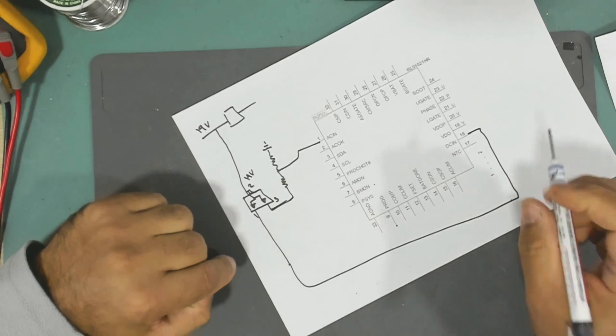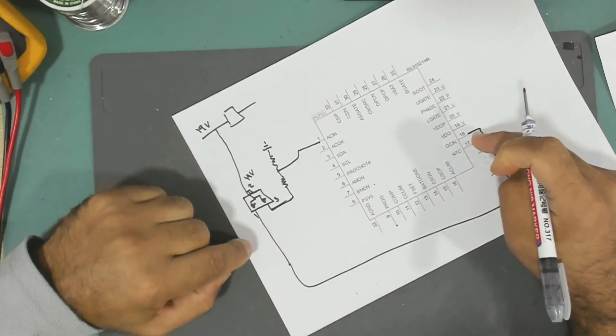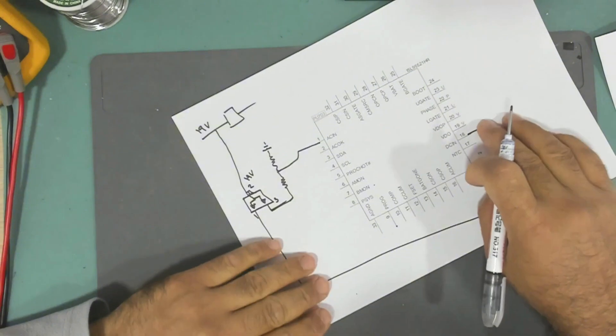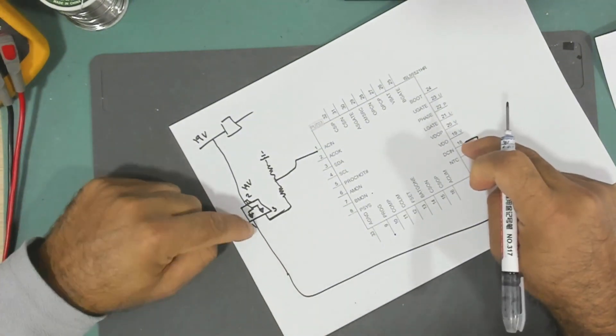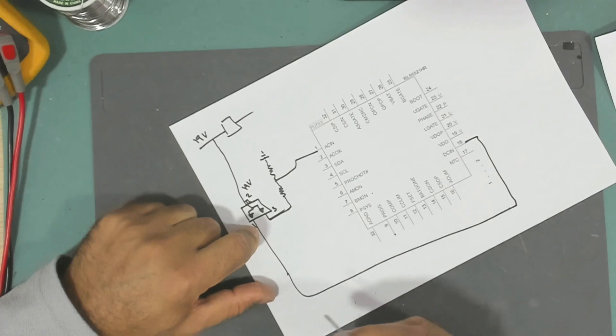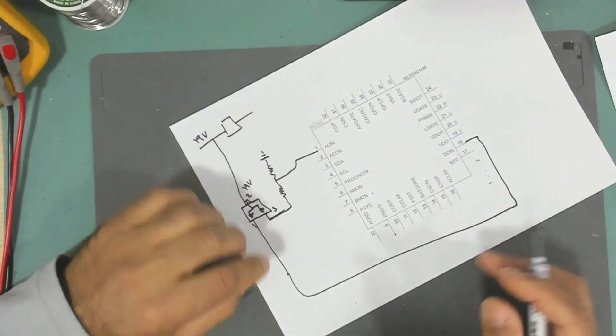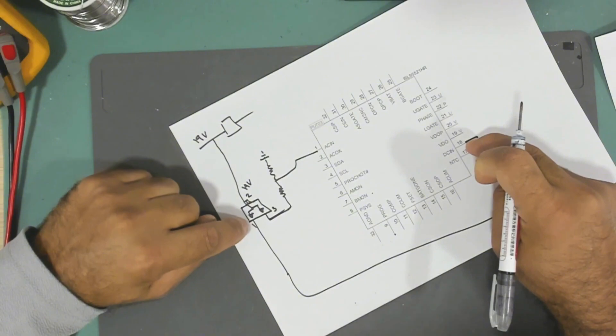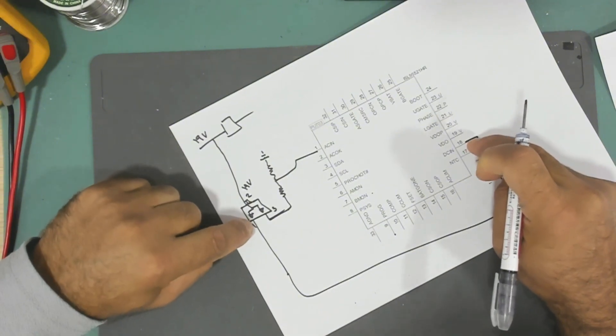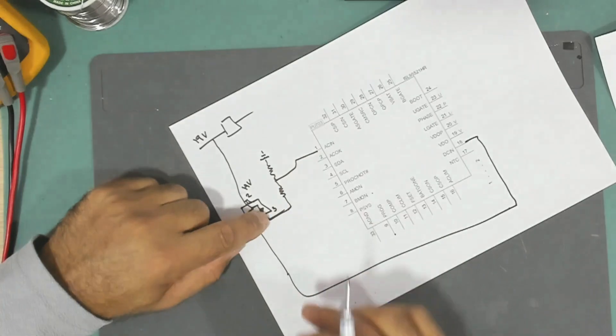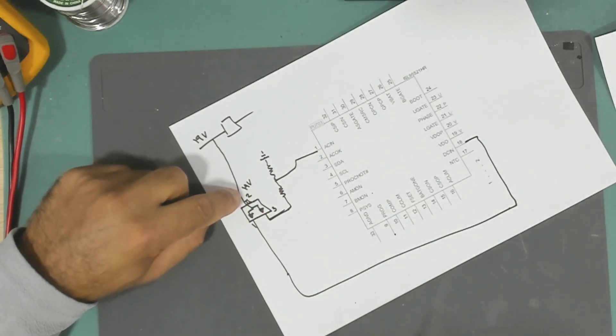When I measured using a voltmeter or a multimeter from here to there, it was a direct link. There is no resistance, no resistors, no diodes, nothing at all. It's connected here and here. This line was there, and this line also was there, but I wasn't getting the 19 volts here.